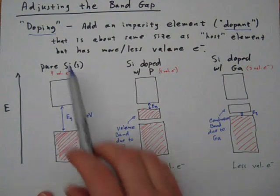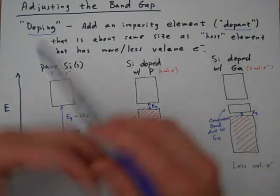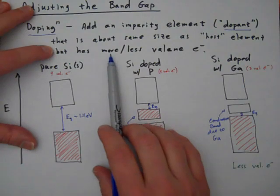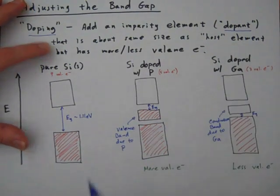Now that dopant needs to have some characteristics. First off, it needs to be about the same size as the host material, so about the same size as a silicon atom if we were talking about silicon. But it needs to have either more or less valence electrons than the host materials.